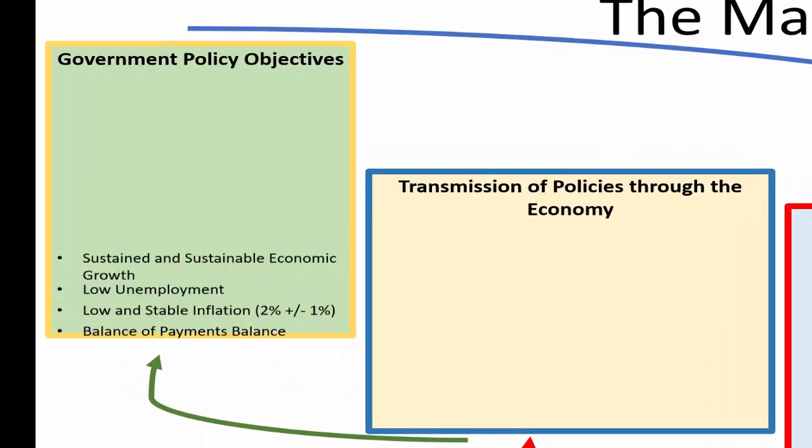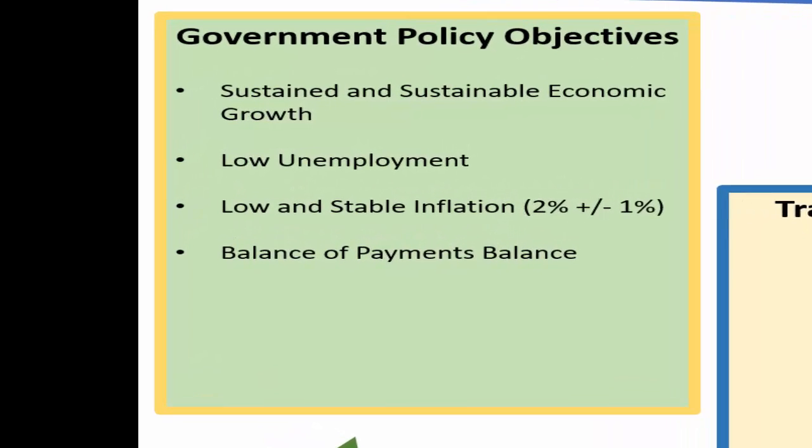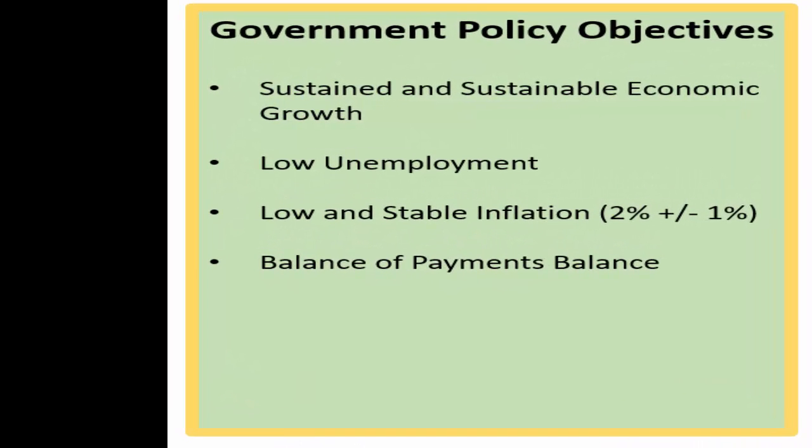So in terms of the government's policy objectives there are four main ones. Sustained and sustainable economic growth, that will be the subject of the next video. Low unemployment, low and stable inflation, so the target for that is 2% with tolerance limit of plus or minus 1%. And then a balance of payments balance, so the value of exports roughly equaling the value of imports.